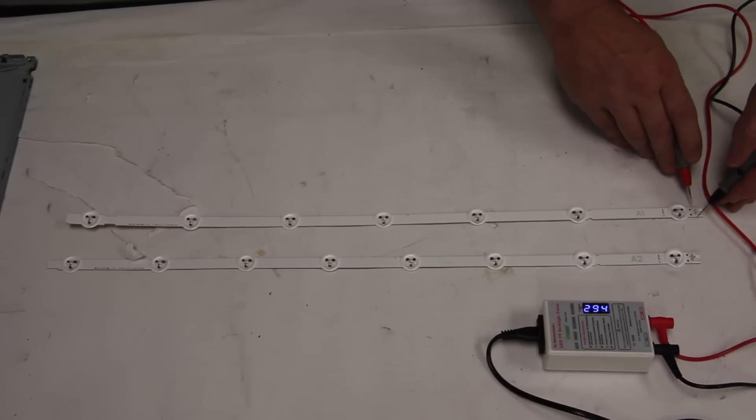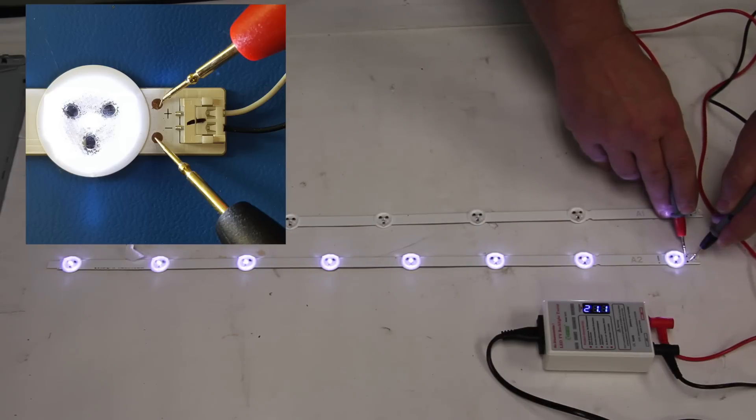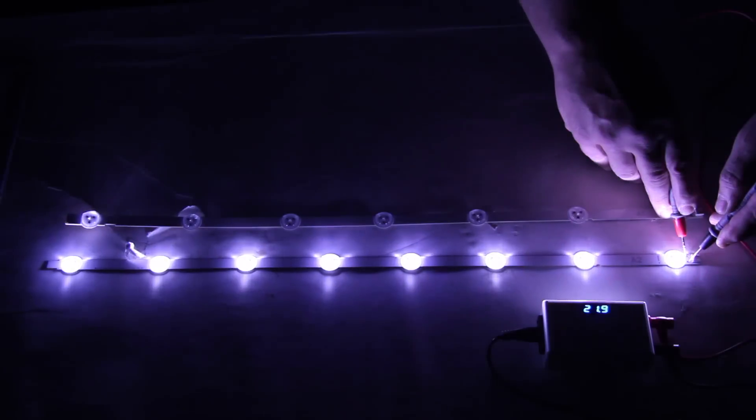Then I will power on my LED tester and place the probes on the appropriate test point. Give the device five seconds to allow it to manage the voltage. As you can see, we have a good LED strip here with all of the LEDs illuminating at the same brightness.